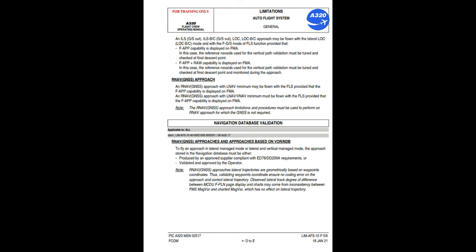Note: the RNAV GNSS approach limitations and procedures must be used to perform an RNAV approach for which the GNSS is not required. Navigation database validation for RNAV GNSS approaches and approaches based on VOR/NDB: to fly an approach in lateral managed mode or lateral and vertical managed mode, the approach stored in the navigation database must be either produced by an approved supplier compliant with ED76/DO200A requirements, or validated and approved by the operator. Note: RNAV GNSS approaches — lateral trajectories are geometrically based on waypoint coordinates; validating waypoint coordinates ensures no coding error on the approach and correct lateral trajectory.